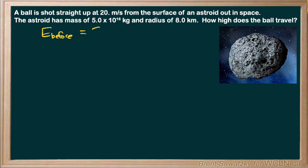E before equals E after. And so from there, what we could do is we could say if this is our surface of our asteroid, and it gets shot up and back down. And this, we could say, is our after. And when it's just being shot up, that would be our before. And we're interested in the height that it travels.